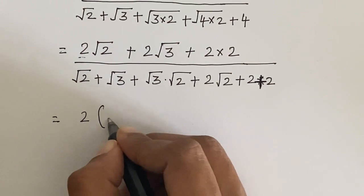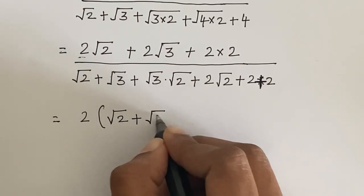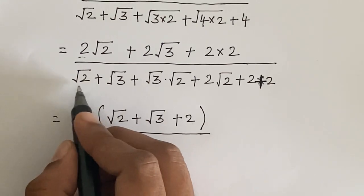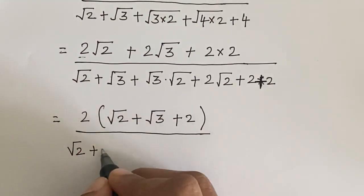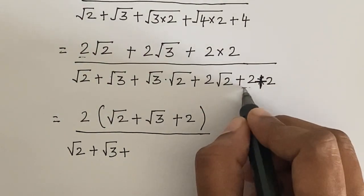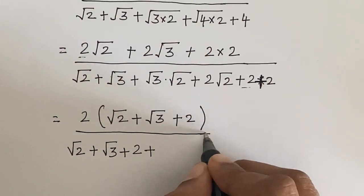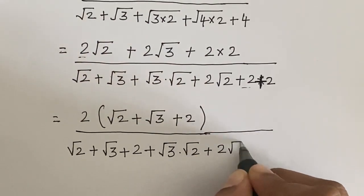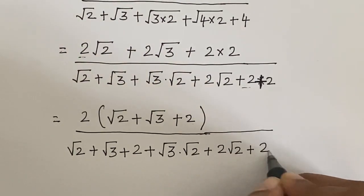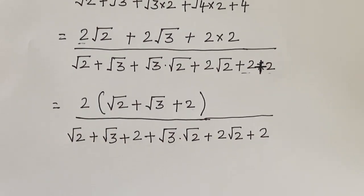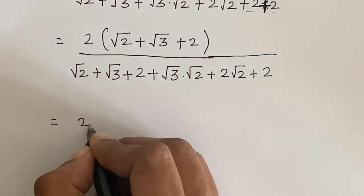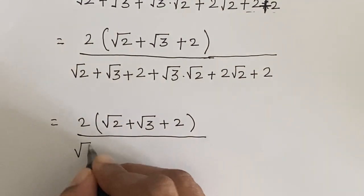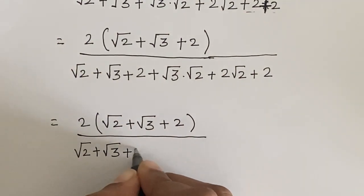In the numerator we have 2 in common, so we take it out. We get 2 times, in parenthesis, square root of 2 plus square root of 3 plus 2, over square root of 2 plus square root of 3 plus 2 plus square root of 3 times square root of 2 plus 2 square root of 2 plus 2.